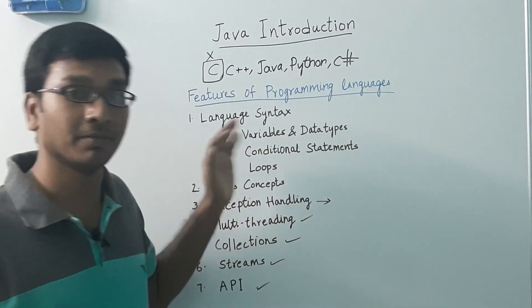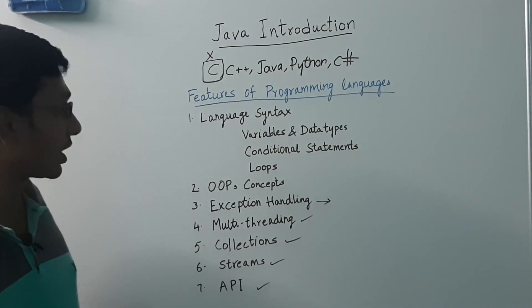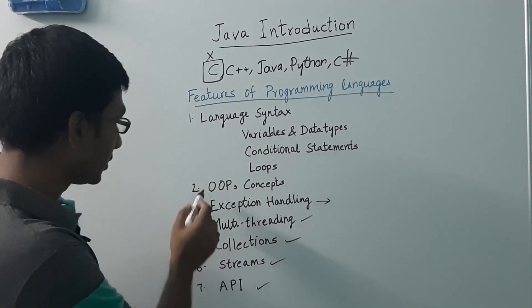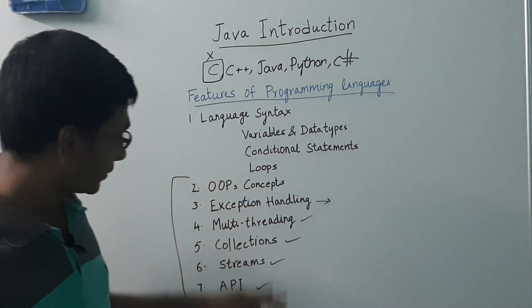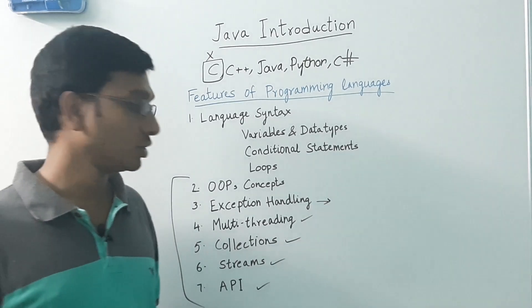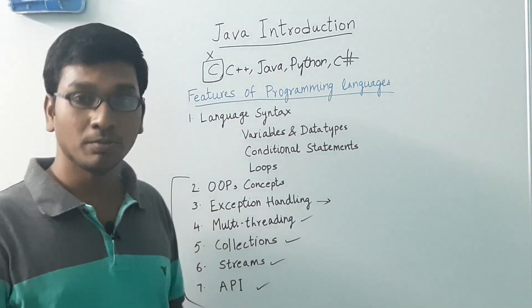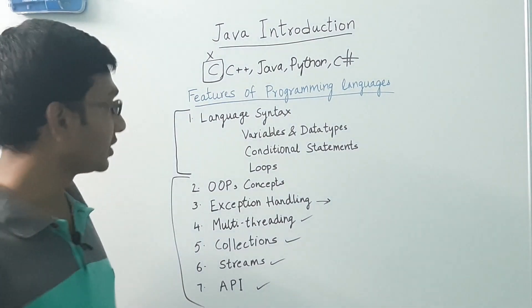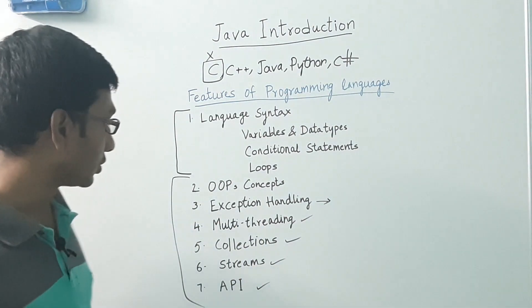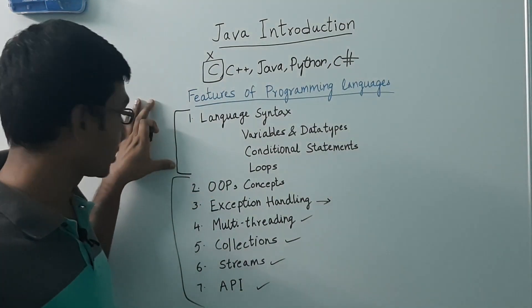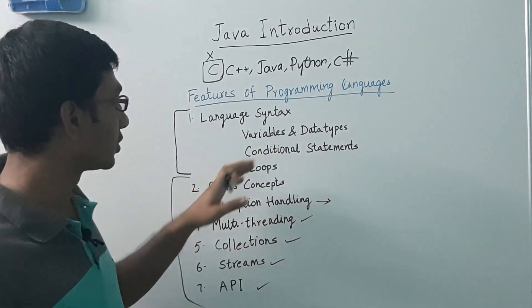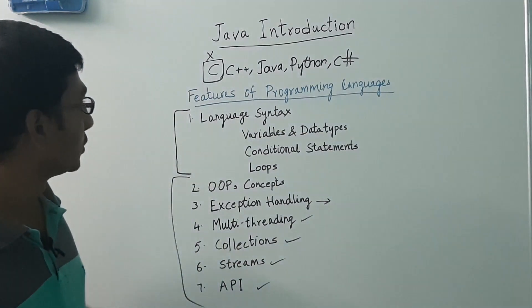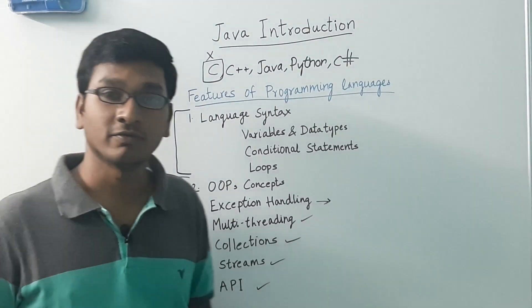Each language has its own set of libraries. So these are the common features of any programming language. Whenever you want to learn any programming language, you need to learn these concepts. If you learn all these concepts for one language, then learning any new programming language becomes simple — you just need to concentrate on the language syntax. Only the language syntax changes for any new programming language you want to learn; all these concepts remain the same. You just need to know the syntax of that language and practice it for a few days.